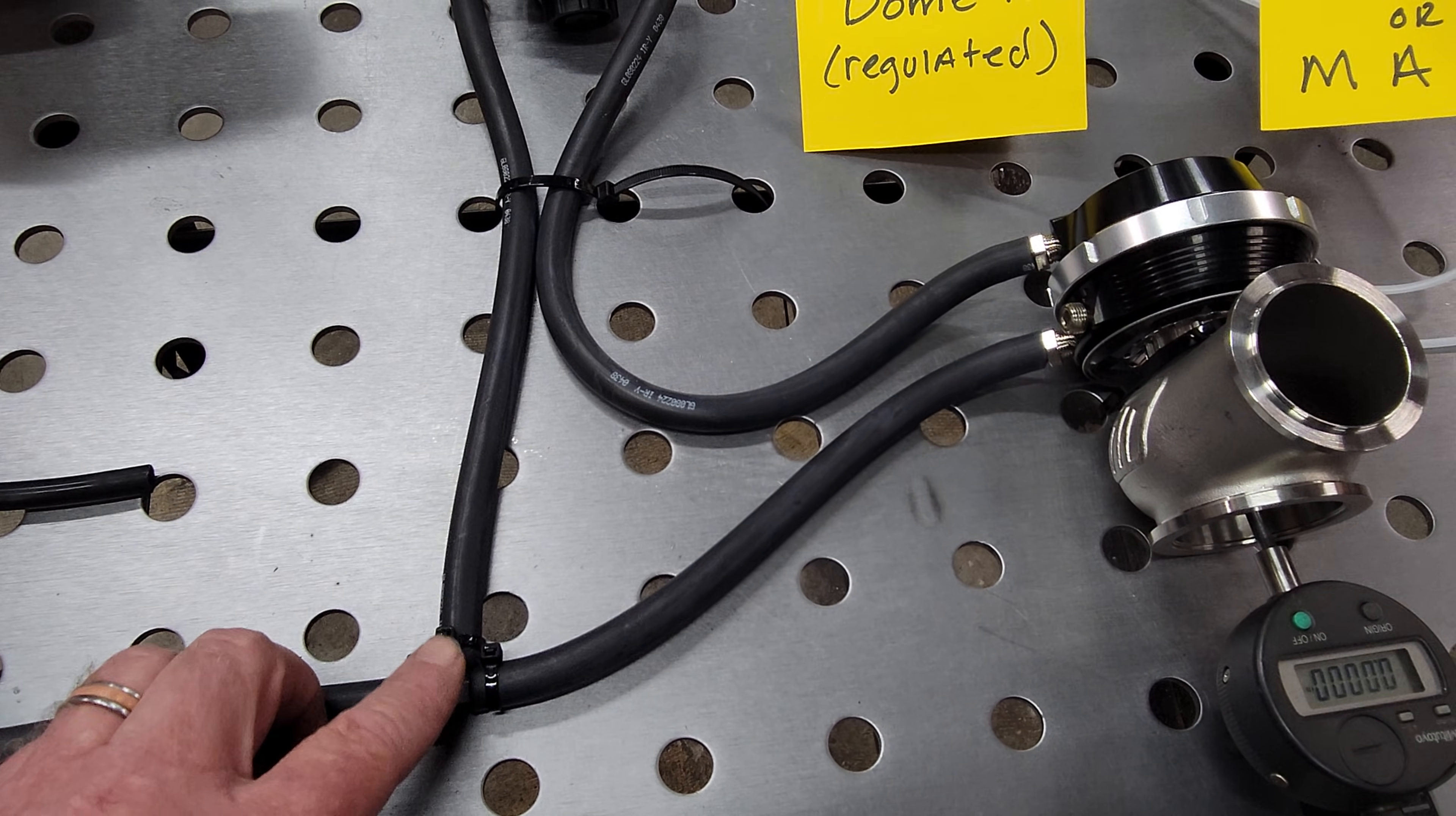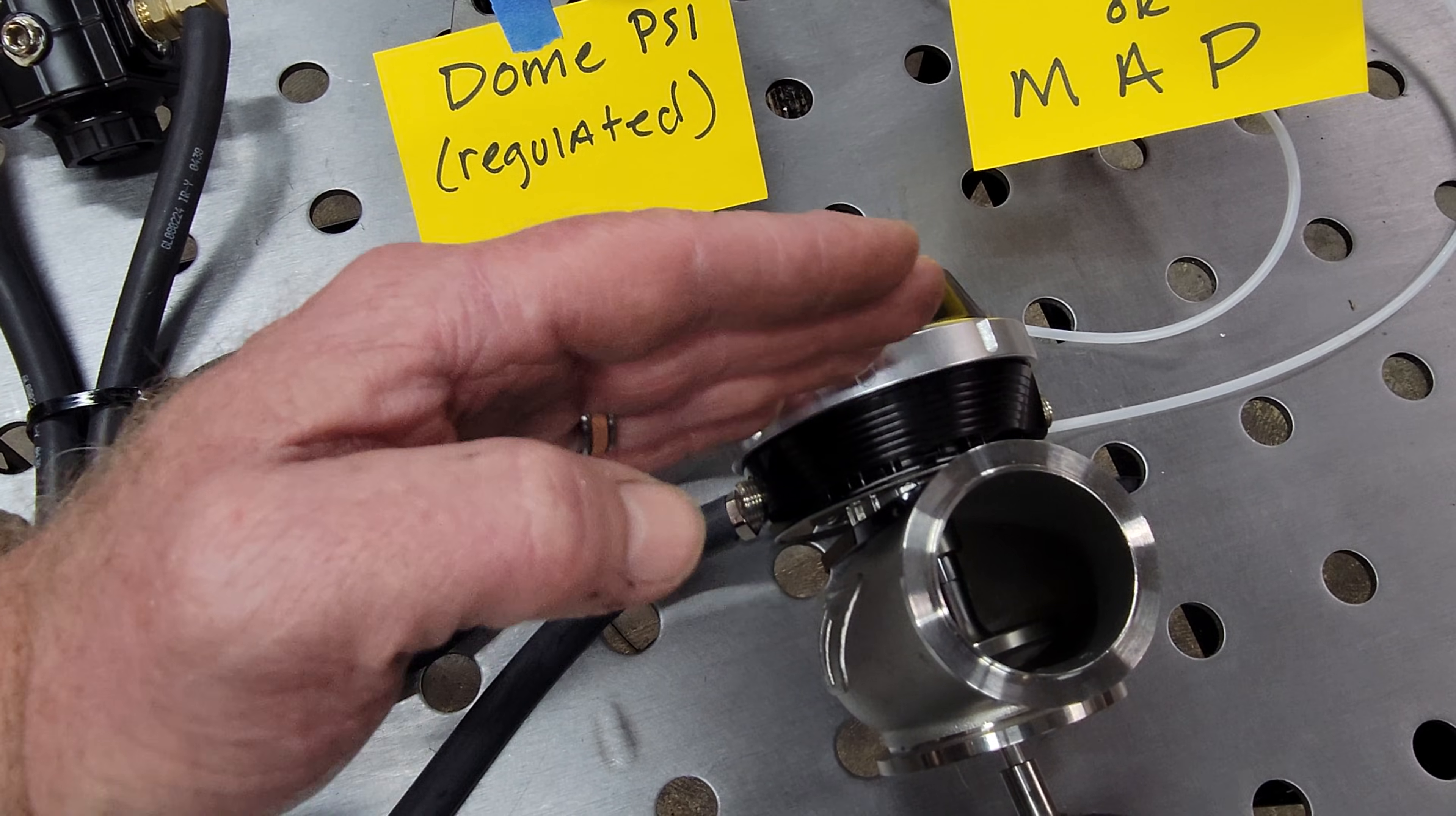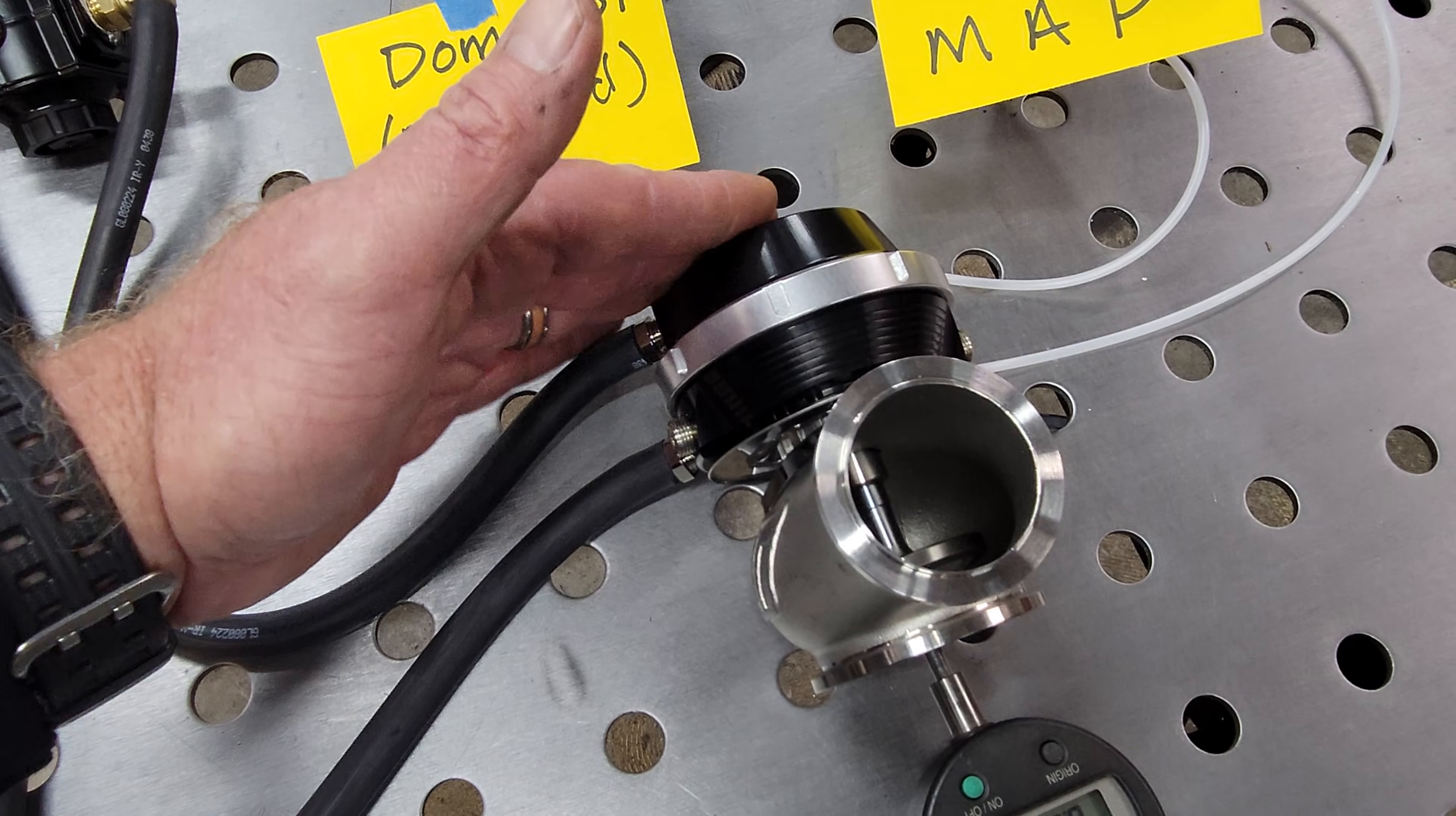But we rob a little bit of manifold pressure, run it through a regulator, we regulate the amount coming out to the top of the diaphragm or the dome as people call it, and by putting pressure here, you will offset the delta from top to bottom of dome pressure to, we'll call that the actuator pressure.